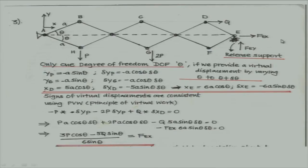F, E, X and then just put this: this multiplied by minus p multiplied by delta y p, minus 2p multiplied by delta y g. Do not change sign again — same sign. Delta x d into q positive, and delta x c into F, E, X. Solve it and you immediately get this is the answer for F, E, X.